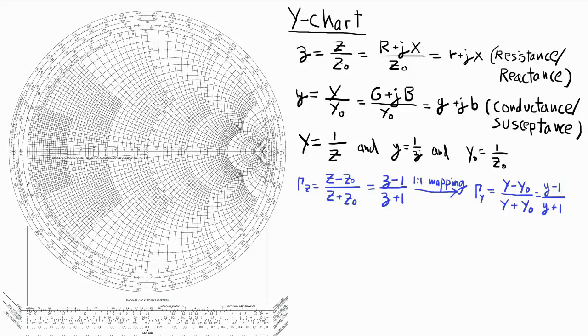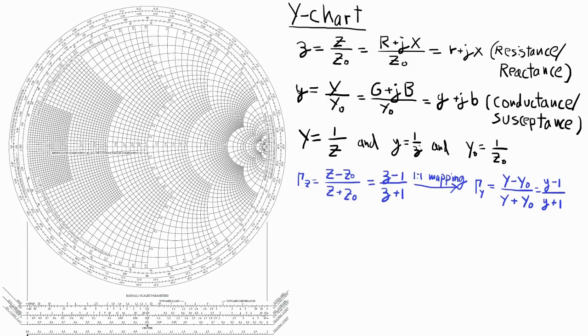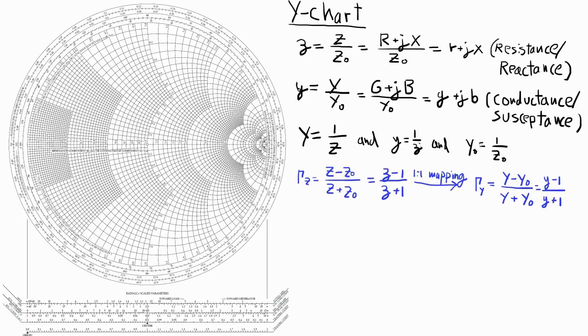We can find the relationship between gamma y and gamma z by substituting 1 over little z into y. So let's see what we find for that. 1 over z minus 1 divided by 1 over z plus 1 is equal to 1 minus z over 1 plus z.